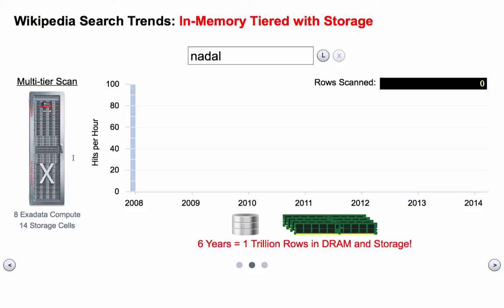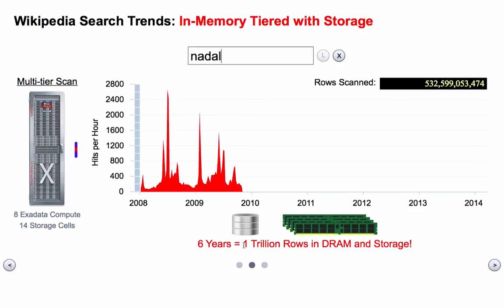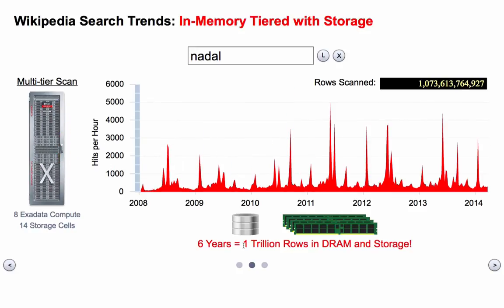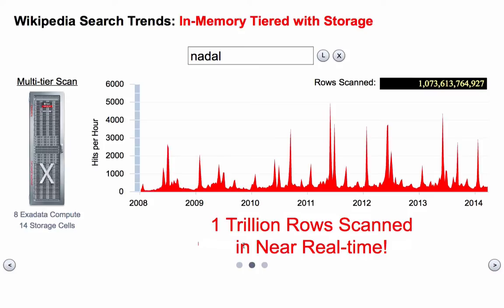Before I had two months and 33 billion rows. Now I'm going to make this gigantic — I'm going to use six full years' worth of Wikipedia data. Wikipedia is an extremely busy website. I'm going to load every search term searched on Wikipedia for six years, which becomes one trillion rows of data. I'm going to run the exact same application and it's going to transparently use memory, flash, and disk to give me the result — and it works transparently regardless of where the data is.